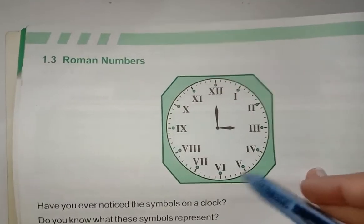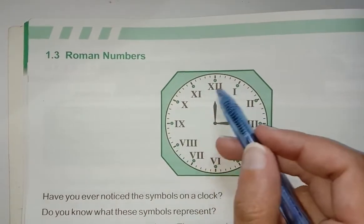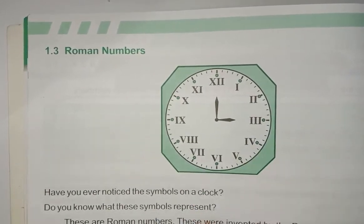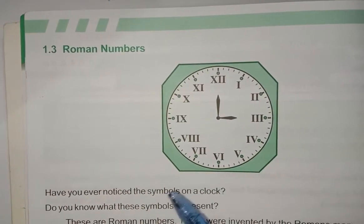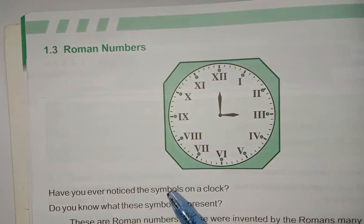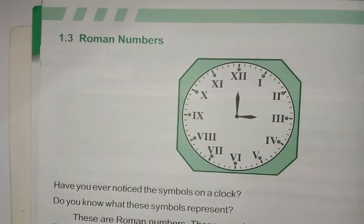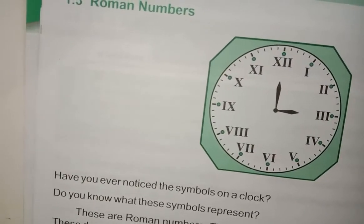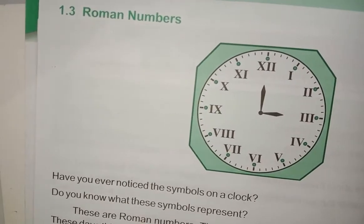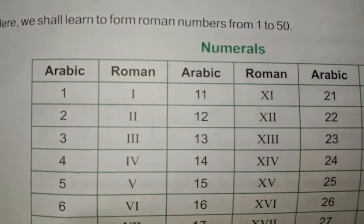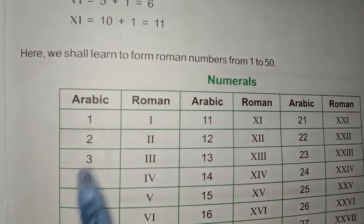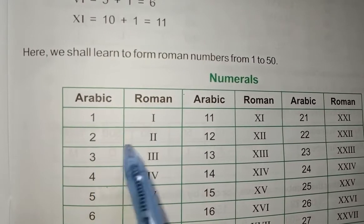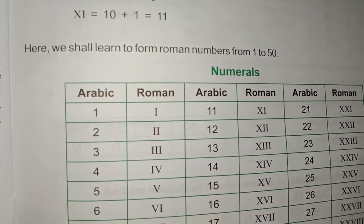What are Roman numbers? The numbers which are represented on a clock are called Roman numbers. Roman numbers are normally used in our daily life, but we normally use Arabic numbers like one, two, three. The numbers we use in our daily life are Arabic — one, two, three, four, five, six, seven, eight, nine, ten. This is normal counting. What are Roman numbers?